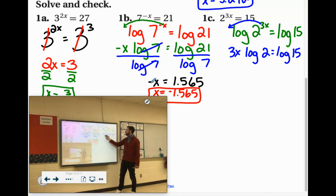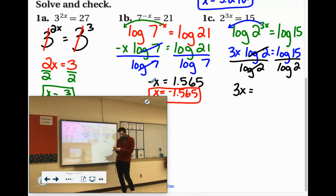So let's divide it. Okay, all right, calm down, Mr. Plant. By both sides by log 2. These cancel out. So we have 3x equals, let's see, log 15 divided by log 2 is 3.907.